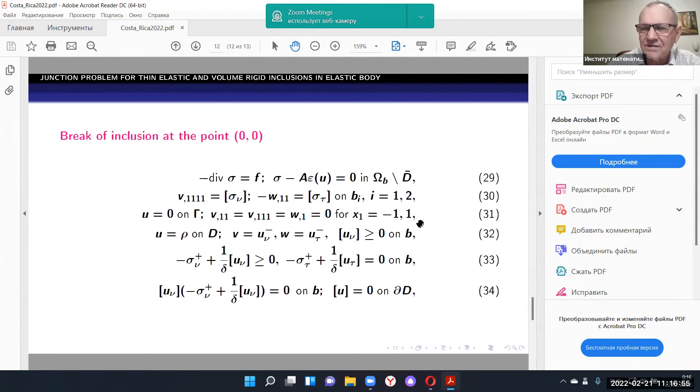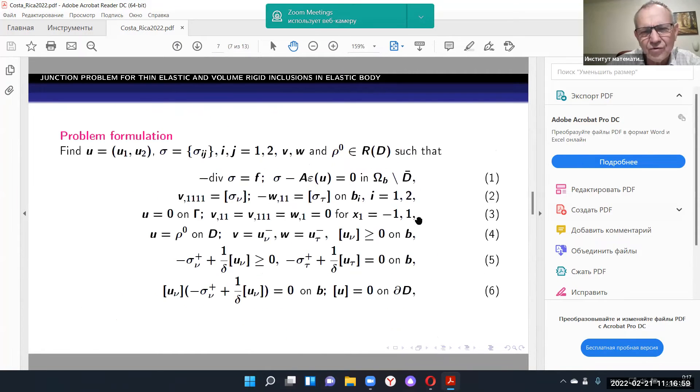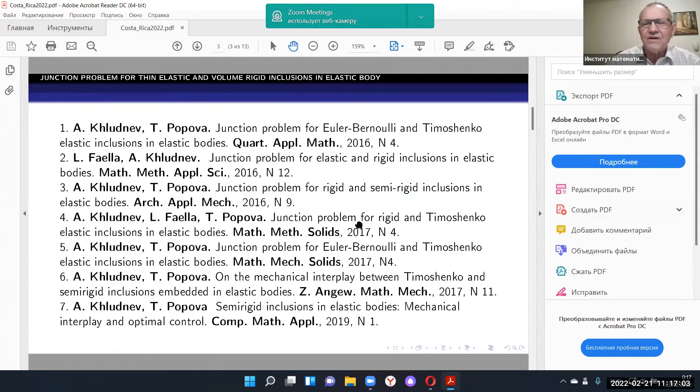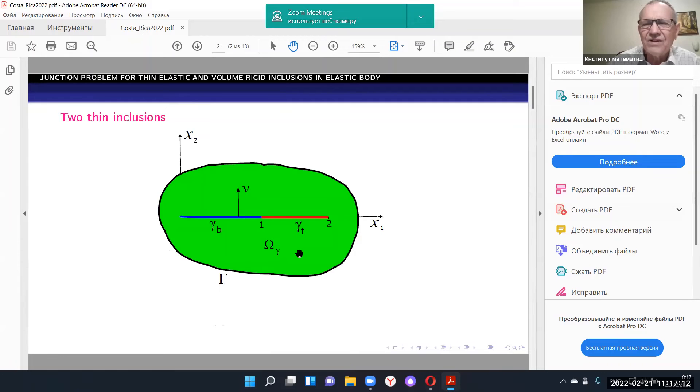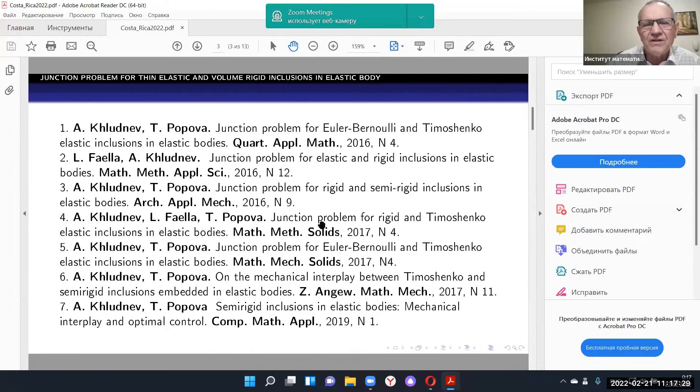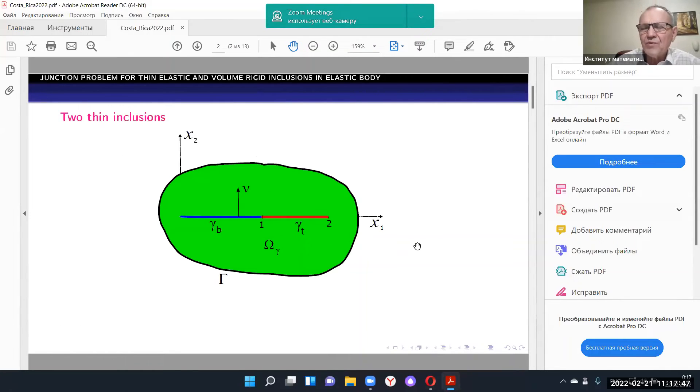I have to say that this problem is quite new. But I would like to go back to this slide, where I have shown several papers concerning the situation like this. We have two thin inclusions and junction point and we have to describe boundary conditions at this point for different thin inclusions. For problems like this, we have a number of numerical results and my co-author Tatiana Popova published a number of papers. They are not shown here on this slide, but they are published and she has numerical results related to this junction problem. This problem I have delivered, this result is very new and up to now we have no results. I hope we will obtain the results in the near future. Thank you very much for the question.